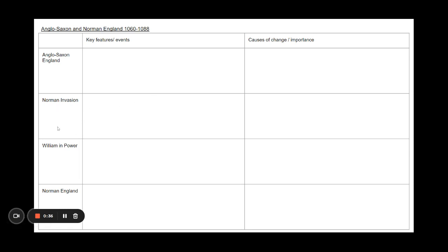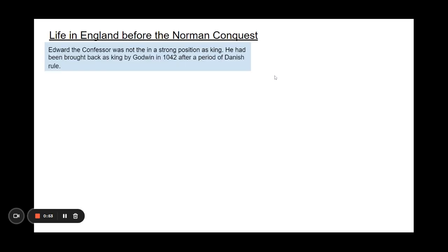It breaks down the four key areas: Anglo-Saxon England, then the Norman Invasion, William and Power, and then life in Norman England. We've got space for those key events and features, and another space for any causes of change — it's a nice way of structuring your notes as you go through. Anyway, we'll dive straight in.